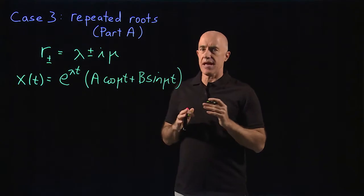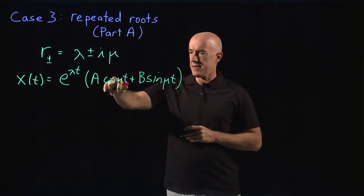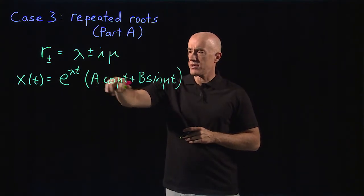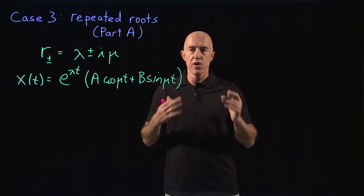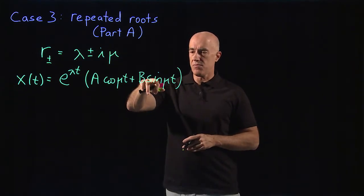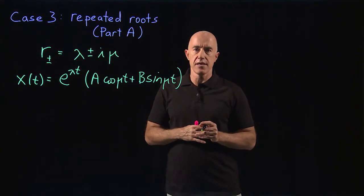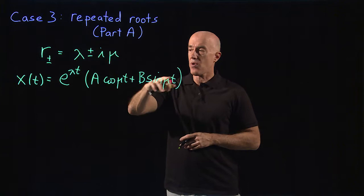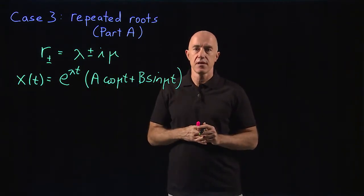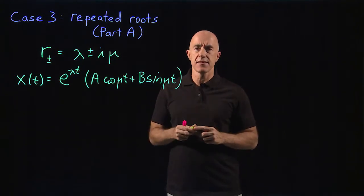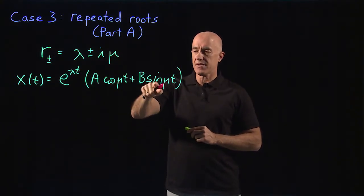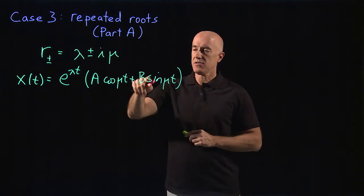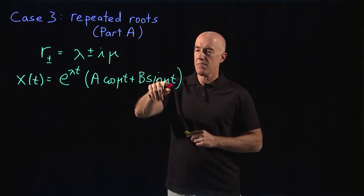Now we try to understand what happens when mu goes to 0. When mu goes to 0, cosine 0 becomes 1, so the first term becomes a times e to the lambda t — that's the one real solution we know. But the sine term gives sine of 0, which is 0, and that's why we're missing the second solution. For a continuous limit to exist, b must go to infinity as 1 over mu.